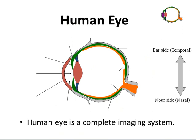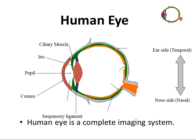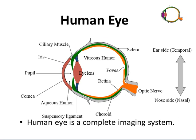Here are some of the main parts of a human eye: ciliary muscles, iris, pupil, cornea, sensory ligaments, sclera, fovea, retina, choroid, optic nerve, eye lens, vitreous humor, and aqueous humor.